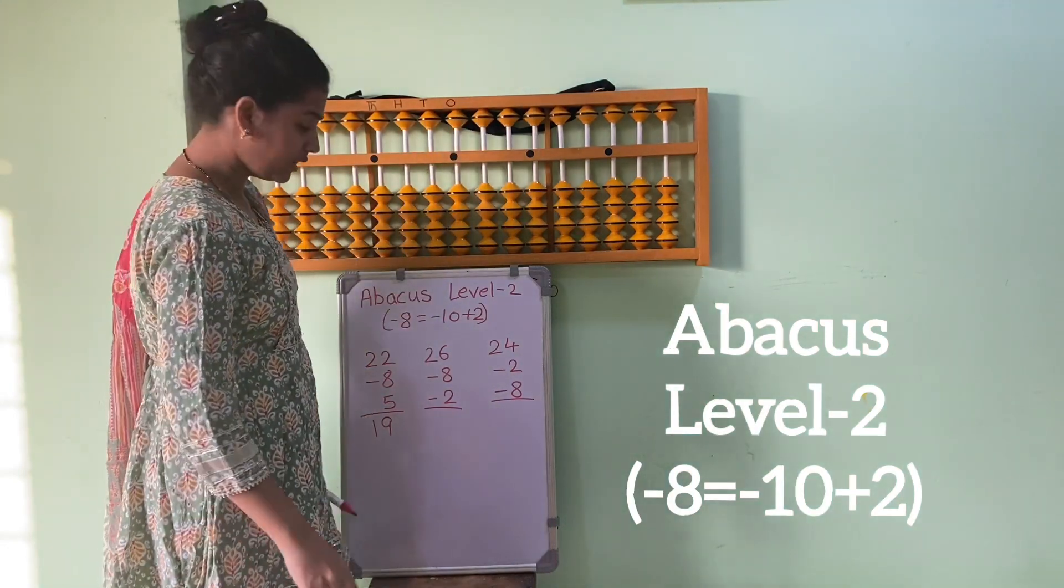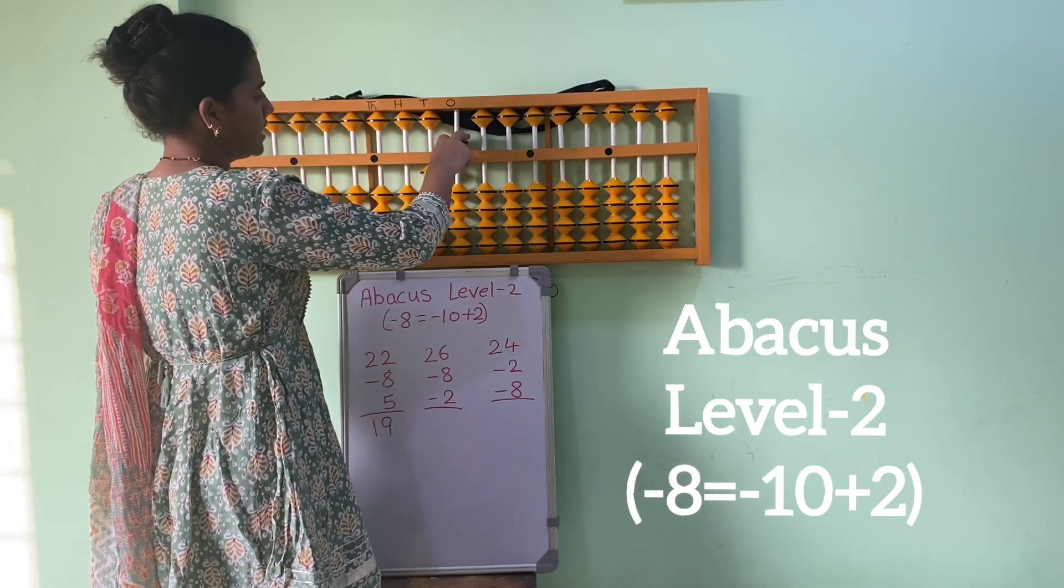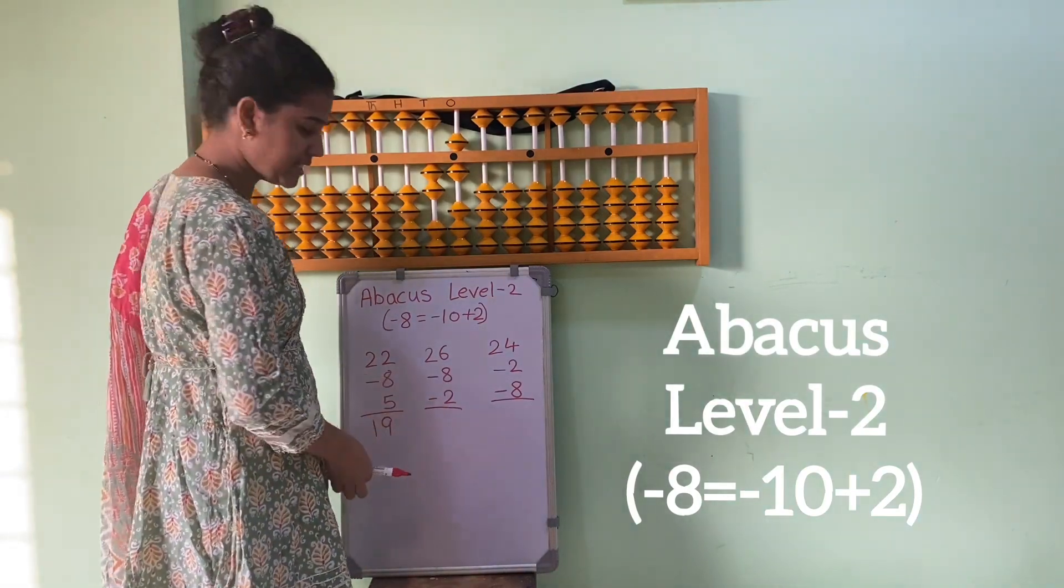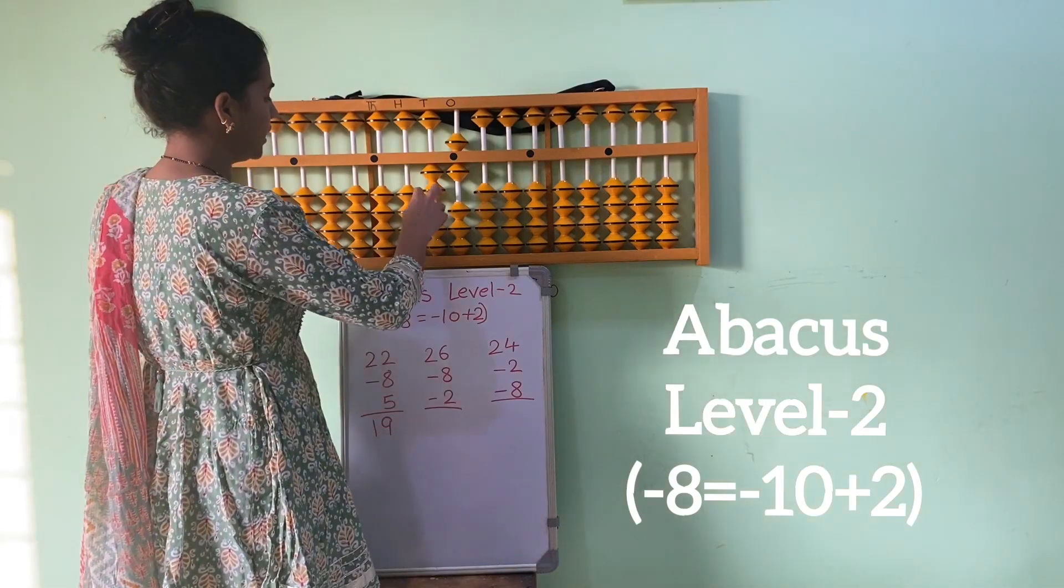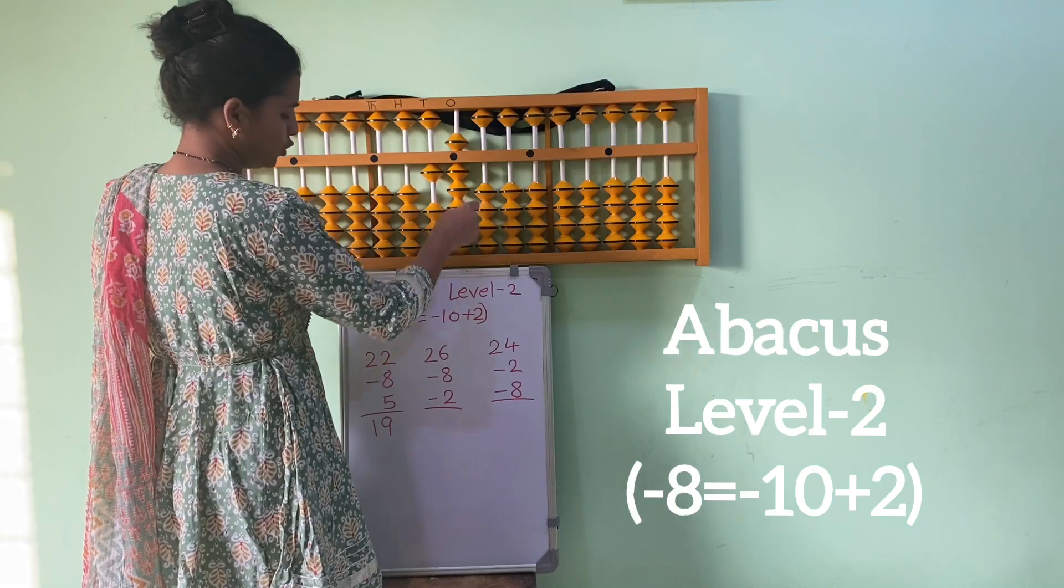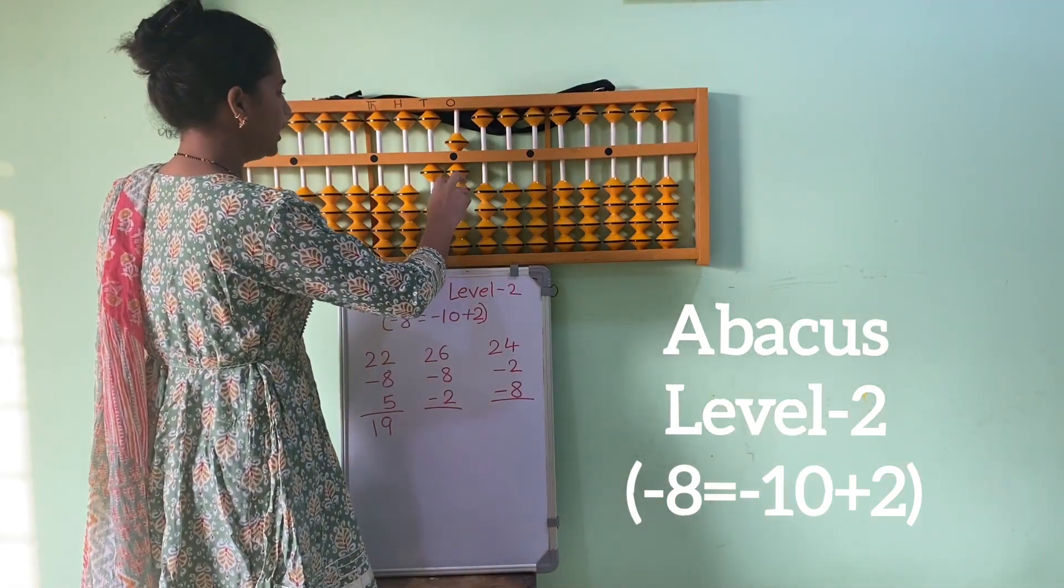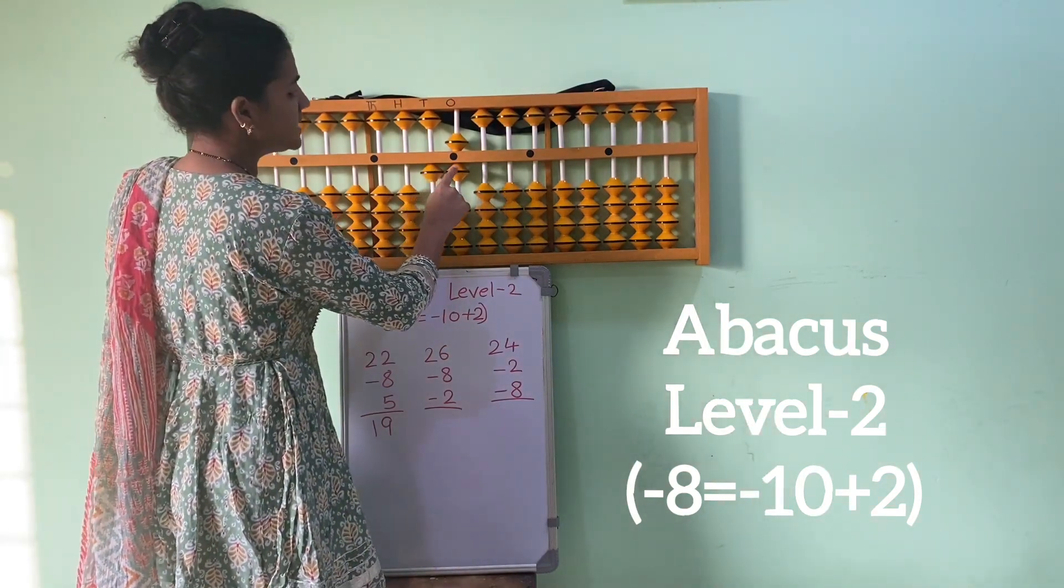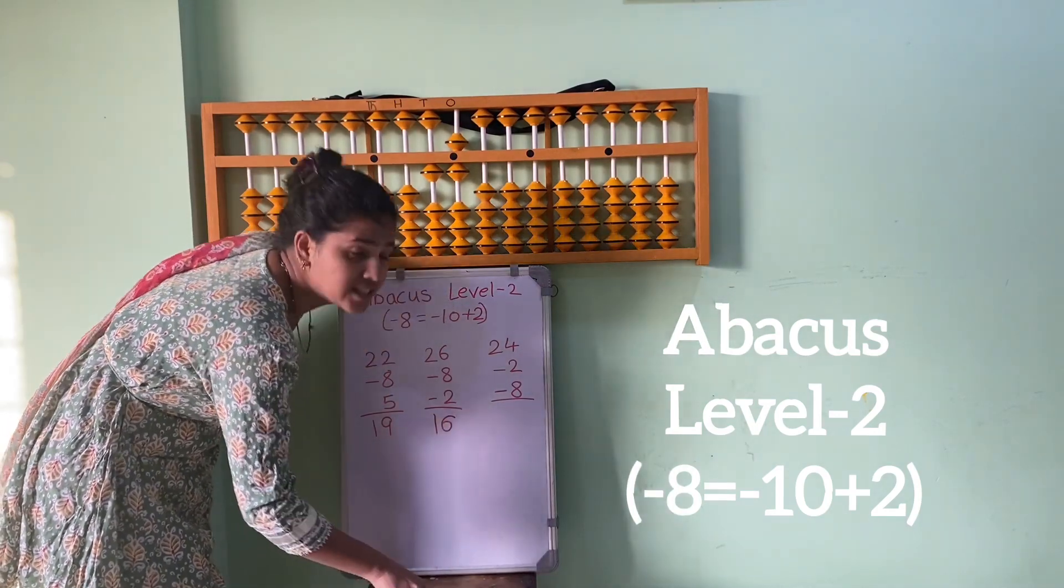Let's see another sum: 26, 2, 6, 26. Now hume kya karna hai? Minus 8 karna hai. So minus 8, formula use karenge. Minus 10 plus 2, 1, 2. Aur abhi hume phir se minus 2 karna hai. 1, 2. So kya hai humara answer? 1, 6, 16.